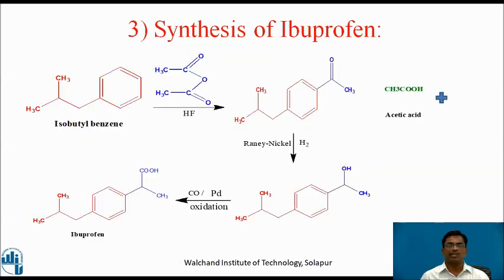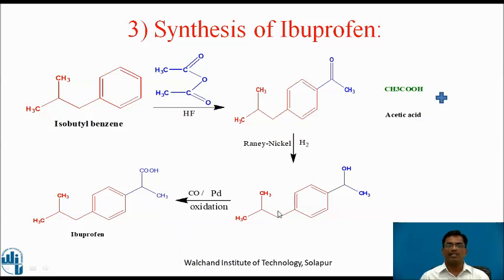This is the reaction. Isobutylbenzene, when treated with acetic anhydride in the presence of HF, gives a product which on hydrogenation with Raney nickel, and further oxidation using carbon monoxide and palladium, gives us ibuprofen.